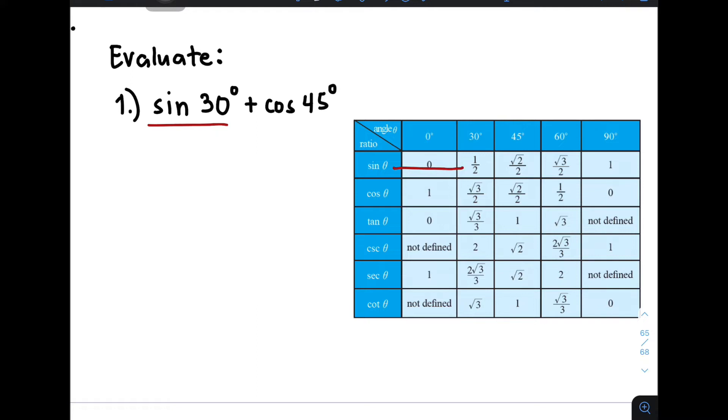So this is sine and 30 degrees, meaning the value of that is one half. So we will substitute one half to replace sine 30 degrees. This is one half plus cosine 45 degrees, in which using our given table here, this is cosine and 45 degrees, in which the value of that is square root of 2 over 2.